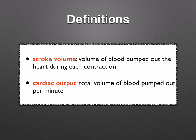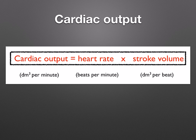Here are two terms that you need to learn. The volume of blood pumped out of the heart during each contraction is the stroke volume, and the volume of blood passing through the heart is the same on the left and right. Your cardiac output is the total volume of blood pumped out per minute. Write down this equation — note the units: cubic decimeter per minute for cardiac output, beats per minute for heart rate, and cubic decimeters per beat for stroke volume.